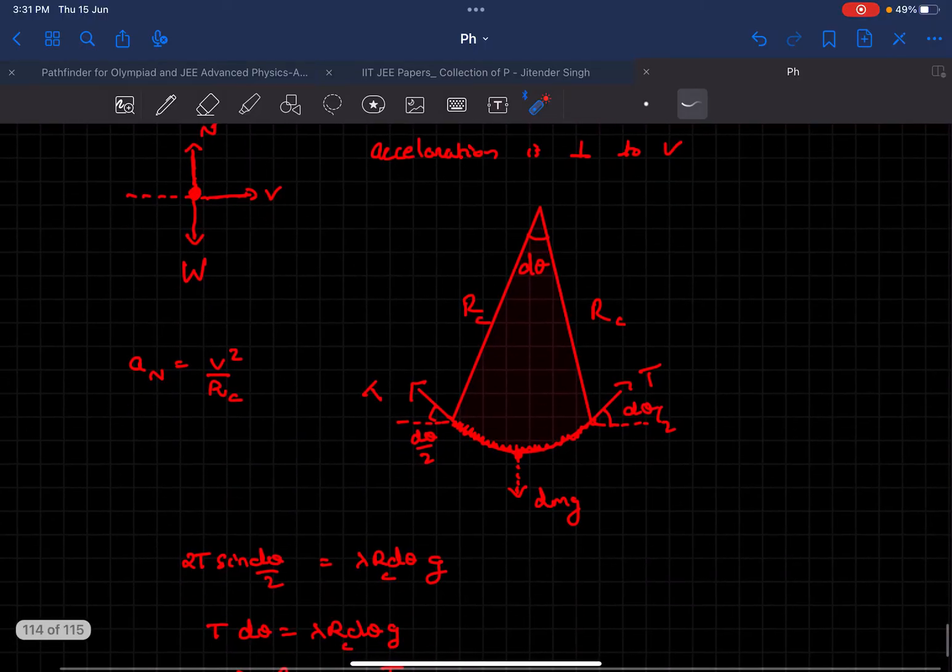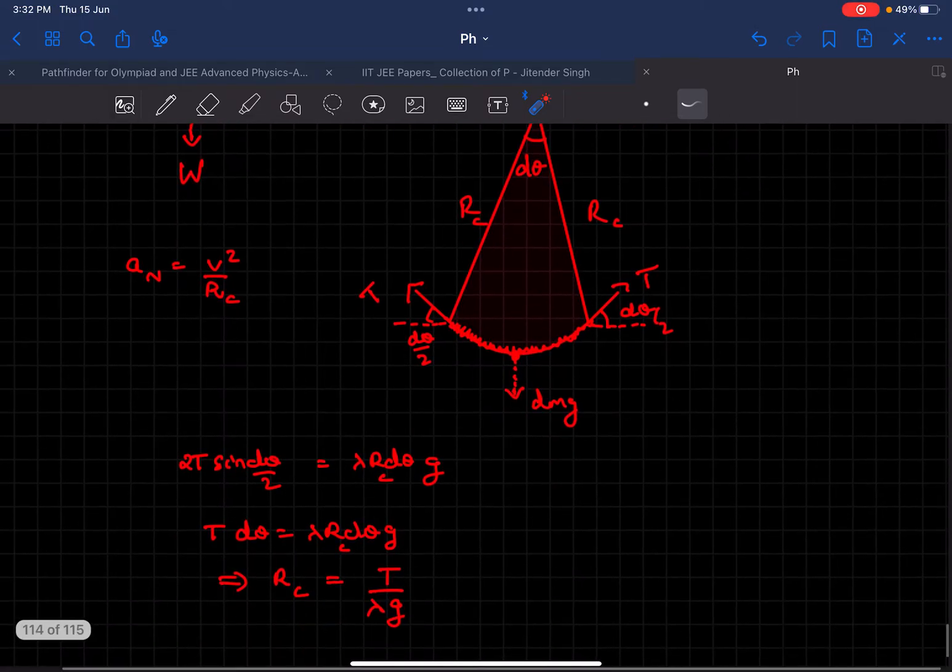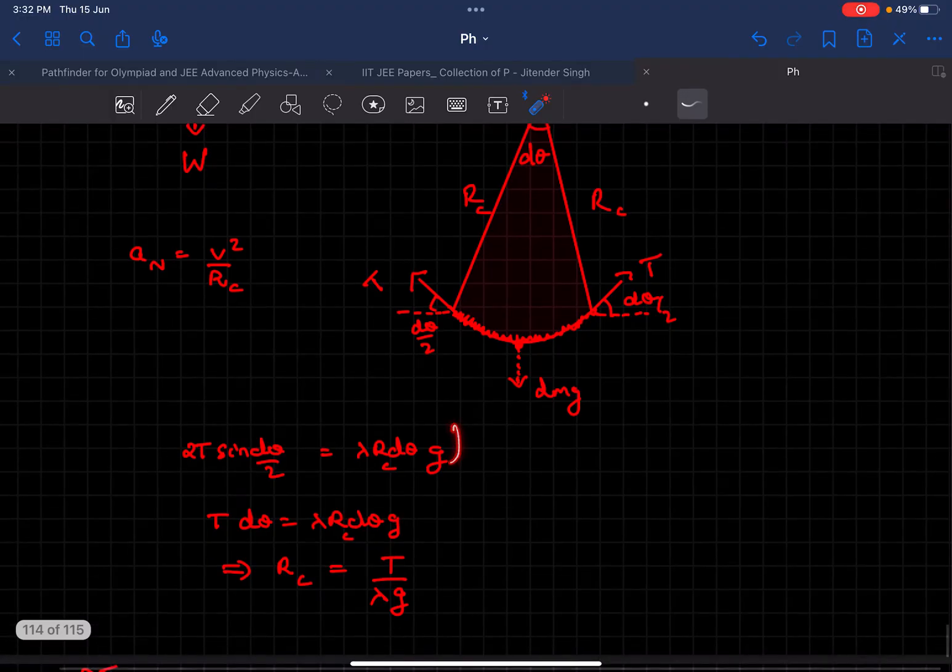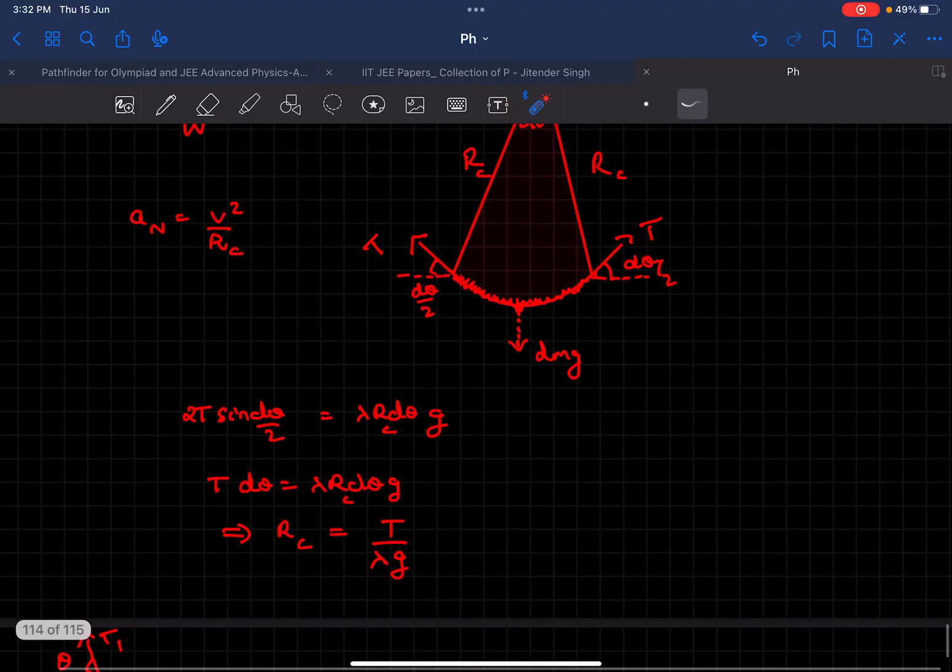Now if you balance the forces of this small part of the rope, let's assume the weight to be dm·g. If you balance it, you'll get the radius of curvature at point C as r = T/(λg), where T is the tension at the bottommost point, at point C.